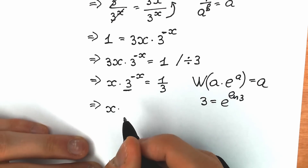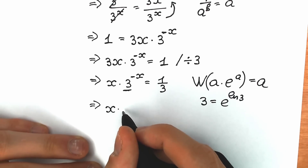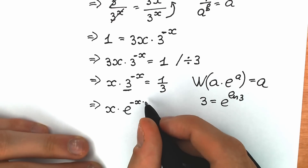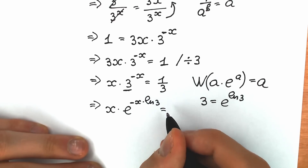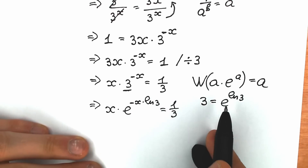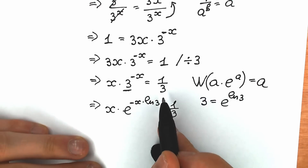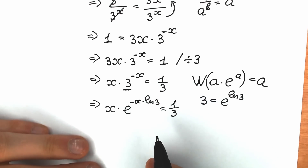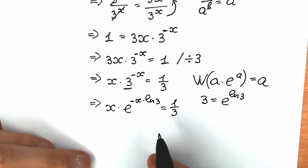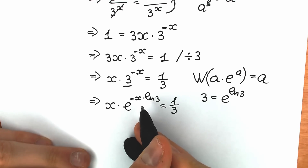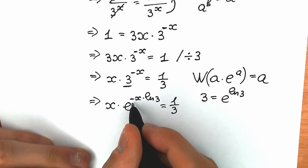Let's replace 3 with e to the power natural log 3. As a result we have x times e to the power minus x times natural log 3, equal to 1 over 3. We just replaced 3 with e to the power natural log 3, and with the minus x we write also minus x. Next, let's multiply both sides by minus natural log 3, because we have minus x times natural log 3 in the exponent.